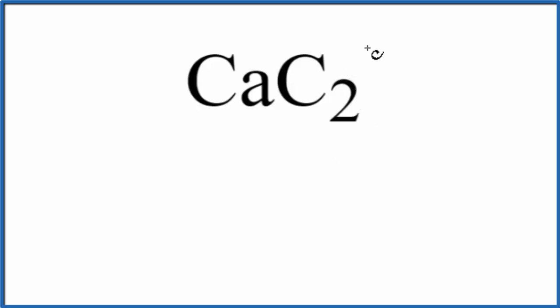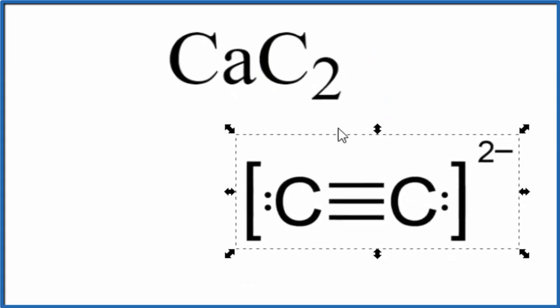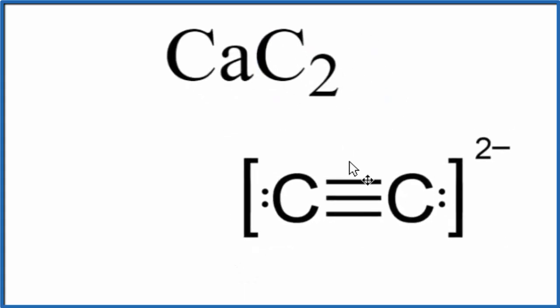For the C2, if we were to draw the Lewis structure just for C2, this is what it would look like. So in this sense, we can consider C2 a polyatomic ion. We have these triple bonded carbons and the whole thing has an ionic charge of two minus.